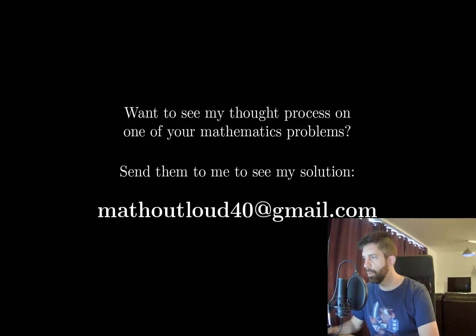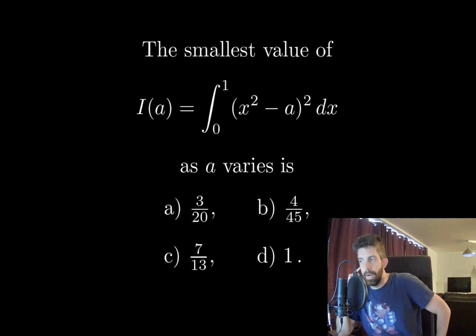Hello everyone, let's solve our next problem. The smallest value of I(a) equals the integral from 0 to 1 of (x squared minus a) all squared dx, as a varies, is 3 over 20, 4 over 45, 7 over 13, or 1.